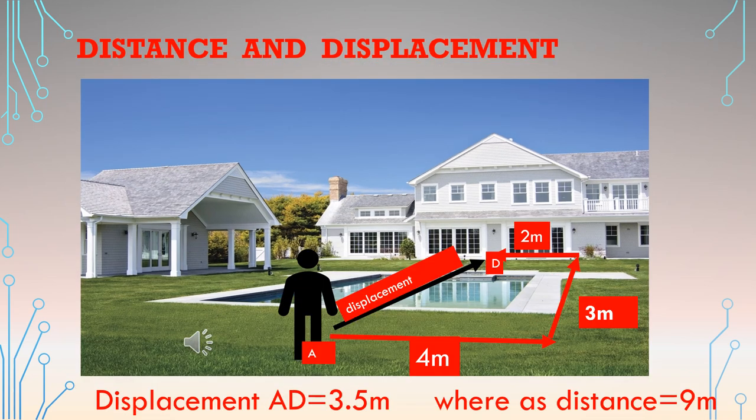Now what is displacement? The man was first standing at A and at last he reached at D. So the displacement is AD — the length of the black line AD represents the displacement, and here it is only 3.5 meters.